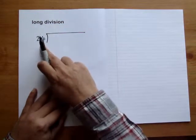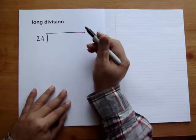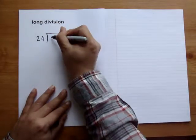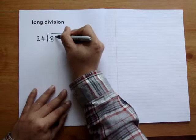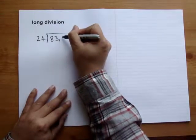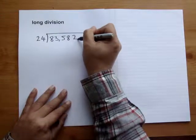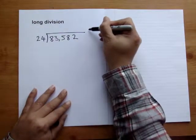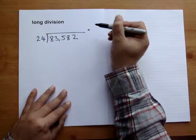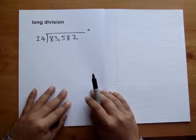This number 24 is called the divisor. This number is called the dividend and then the answer which goes here is called the quotient.